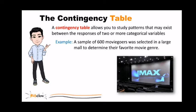But what if we need to study patterns that may exist between the responses of two or more categorical variables? We can use the contingency table. For example, a sample of 600 moviegoers was selected in a large mall to determine their favorite movie genre. Since the gender was considered in the profile, we will use the contingency table.